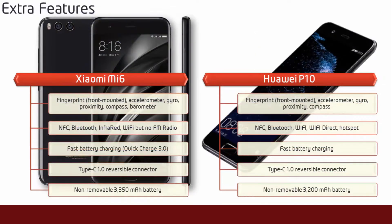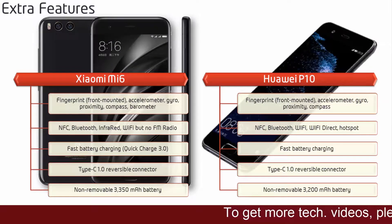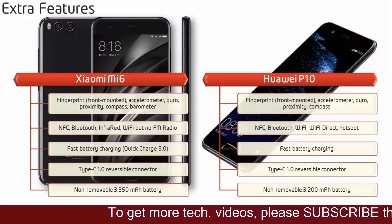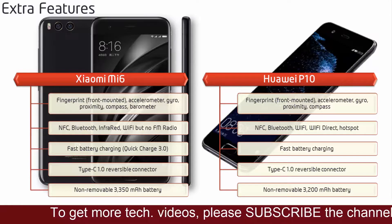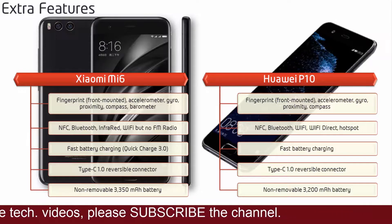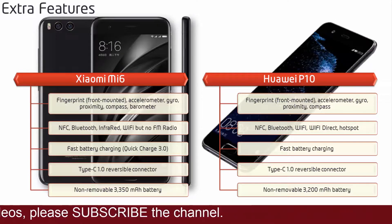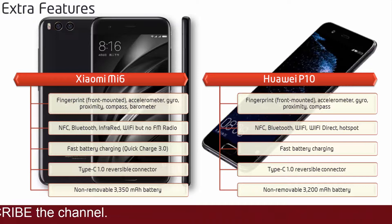Friends, there is a front-mounted fingerprint scanner in the Mi 6. It has accelerometer, gyro, compass, proximity barometer, HTML5 with no Java support. This phone has Bluetooth, NFC, infrared, Wi-Fi and also has a Type-C reversible connector, fast battery charging feature and comes with a 3350mAh battery.